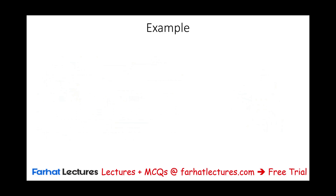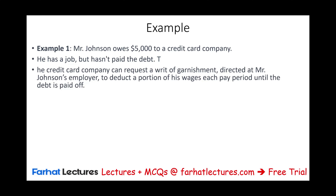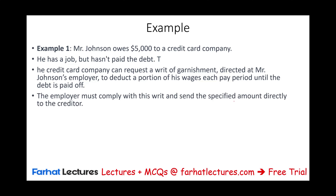For example, Mr. Johnson owes $5,000 to a credit card company. He has a job but hasn't paid the debt. The credit card company can request a writ of garnishment directed to Mr. Johnson's employer to deduct a portion of his wages each pay period until the debt is paid off. The employer must comply with this writ and sends the specified amount directly to the creditor. This is an example of garnishment.